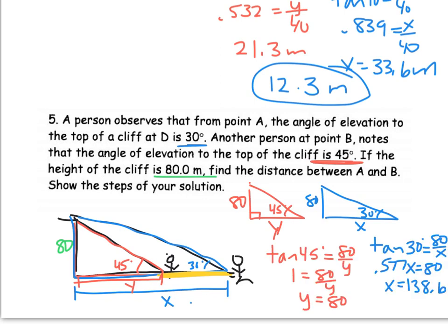So now I've solved those two triangles for the horizontal side. And my last step is going to be to subtract them. 138.6 minus 80, which gives me 58.6 meters.